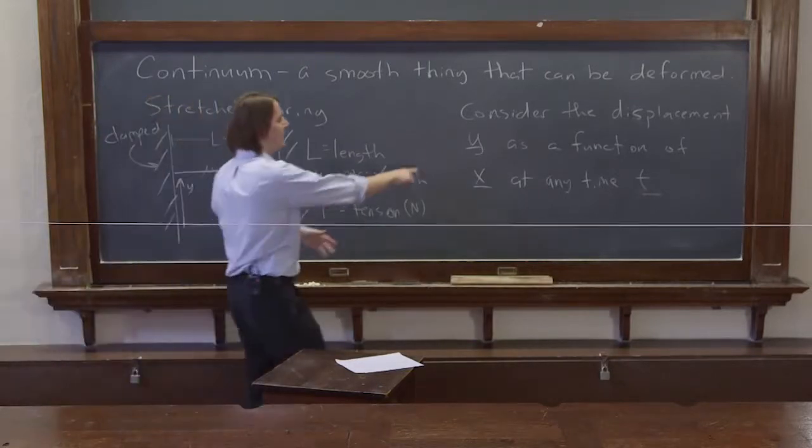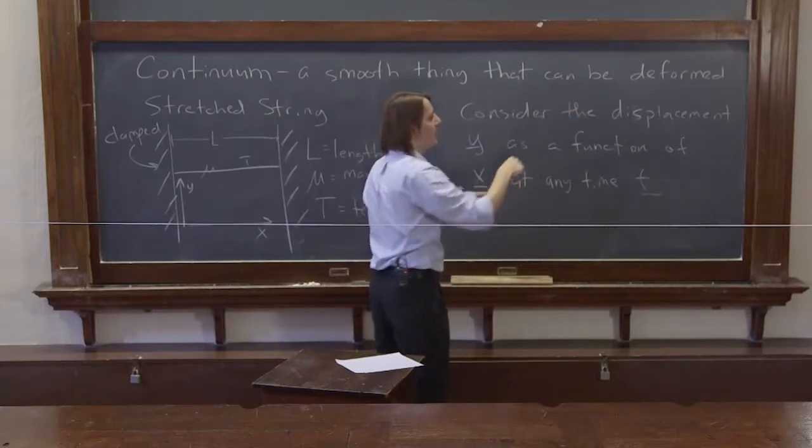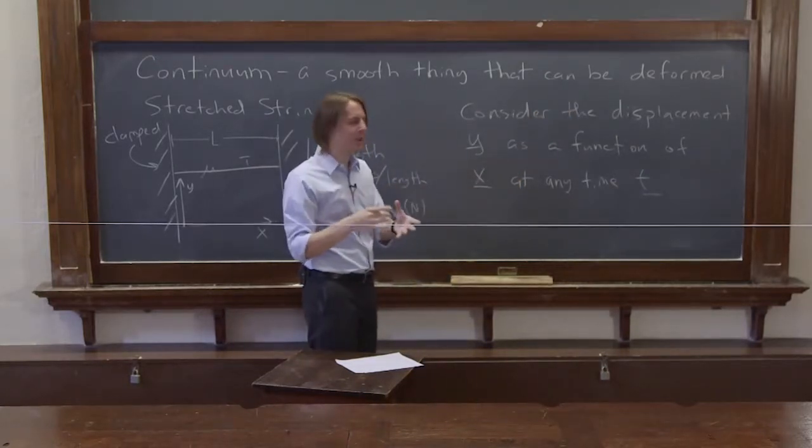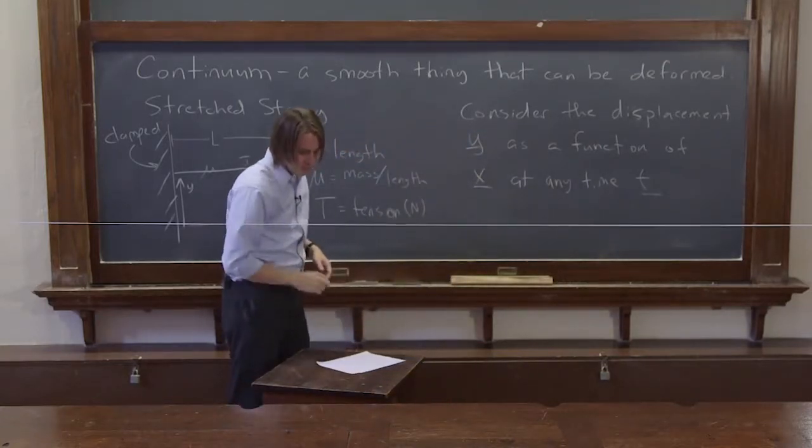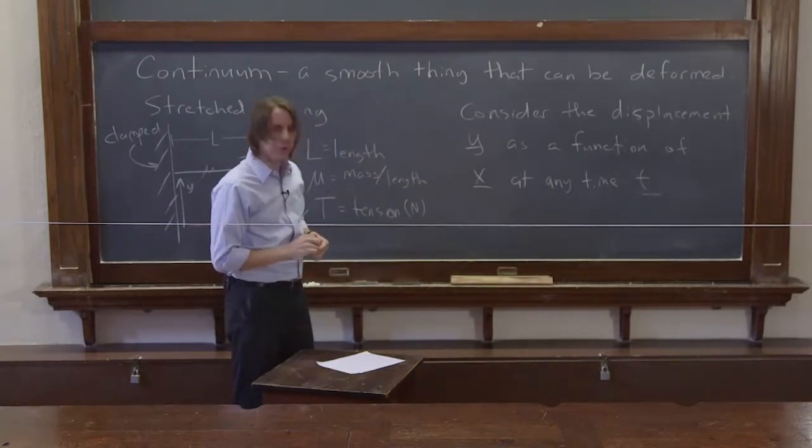But the reason this has two spatial dimensions is because it is a thing that can be deformed. When you have a rigid object, it always moves together. Maybe it rotates, but everything always has the same x. Here, you can have different positions as a function of x. And that's what makes it a continuum, and that's what makes the math a little bit harder. But it's not that much harder.